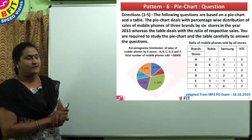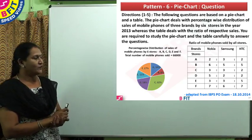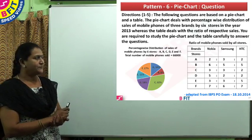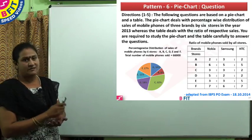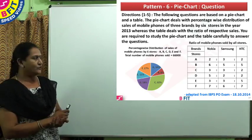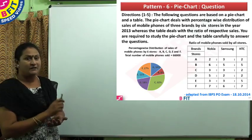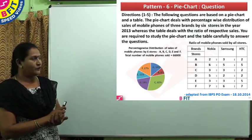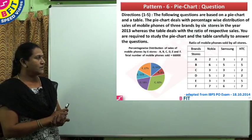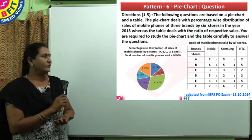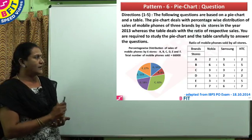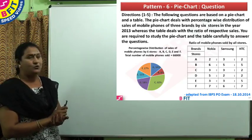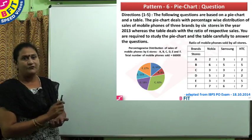Store A sells 14% of the 66,000 mobile phones, B sells 8%, C sells 32%, D sells 18%, E sells 11%, and store F sells 17% of the total 66,000 phones.